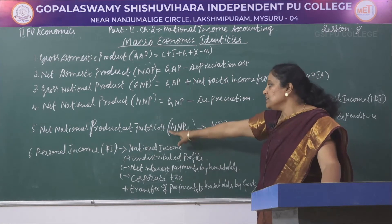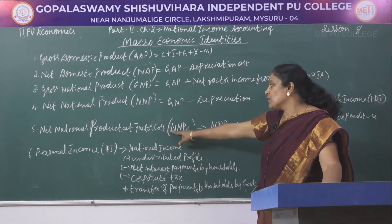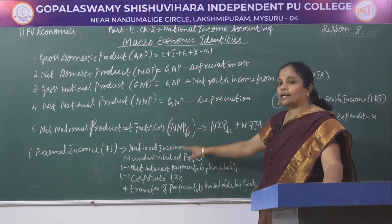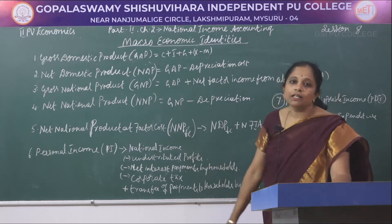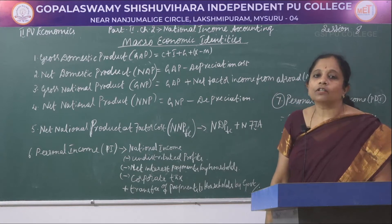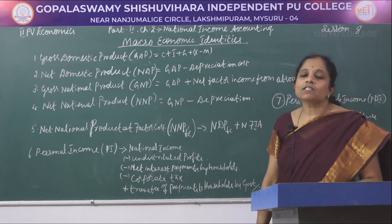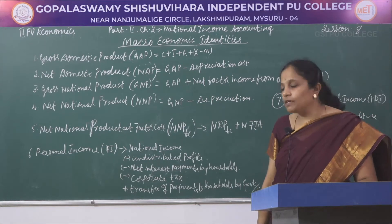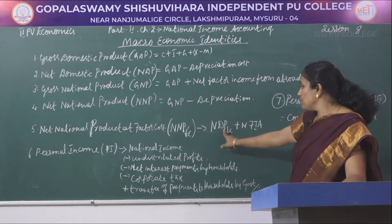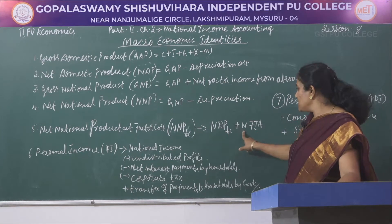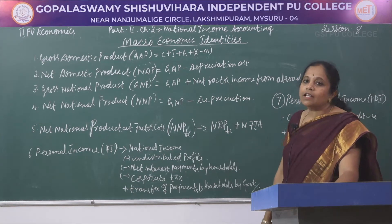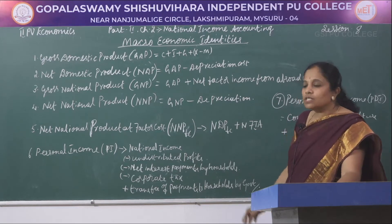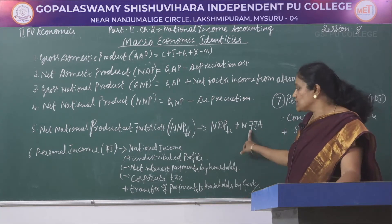The fifth identity is net national product at factor cost. This factor cost is the cost incurred for the factors of production of a country. The formula is NDP at factor cost plus net factor income from abroad.